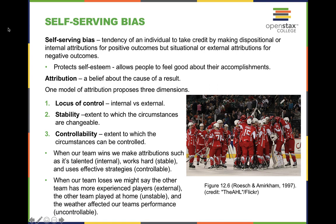For example, when a football player catches a touchdown pass and celebrates in the end zone, they're attributing success to themselves internally. But when that same receiver trips or drops a pass, they may fake an injury or hobble — attributing the negative outcome to something external, like a divot in the grass or an injury, claiming it's outside of themselves and out of their control.